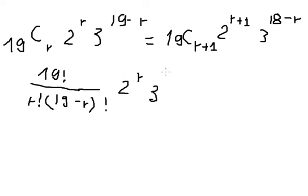The term 3 to the power of 19 minus r can be written as 3 to the power of 19 multiplied by 3 to the power of negative r.